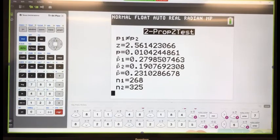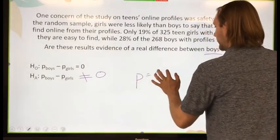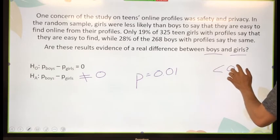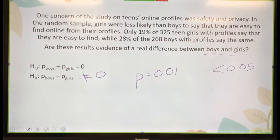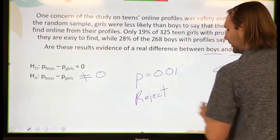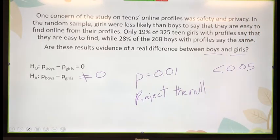I have a p-value of 0.01. Would you say this is significant? Yes — it's less than 0.05. So am I going to fail to reject the null or reject the null? Reject. Once again, I'm going to reject the null, which means it does look like there is a difference between girls' and boys' profiles and how easy it is to find them. What percentage chance do I have of being wrong?